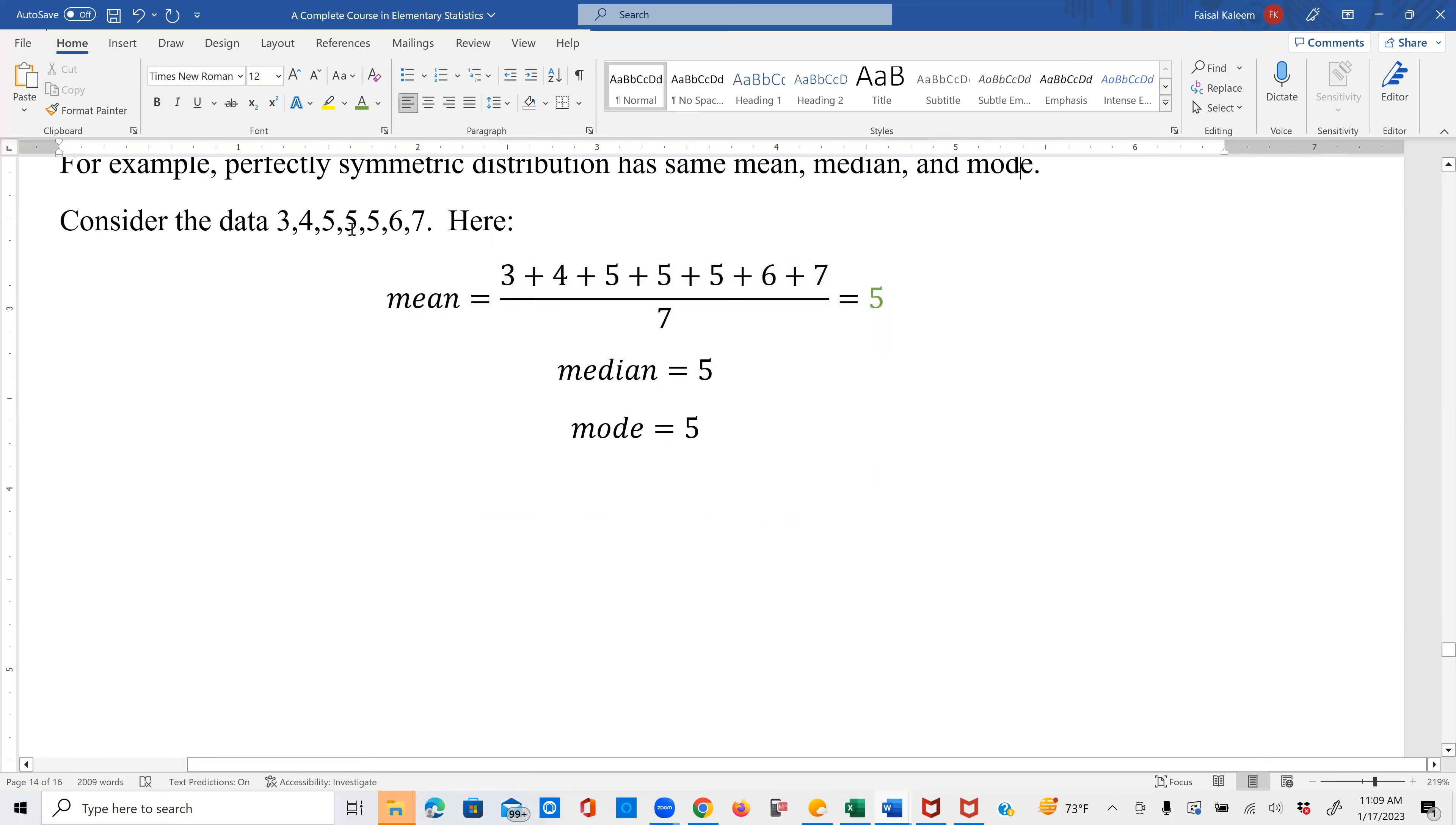And we can see that the median is also 5 because this 5 is the central value. This is already arranged in ascending order. So the central value that we see here is 5, which is the median. And the mode is also 5 because 5 is the most occurring value. So a data can have the same mean, median, and mode, but it doesn't have to.